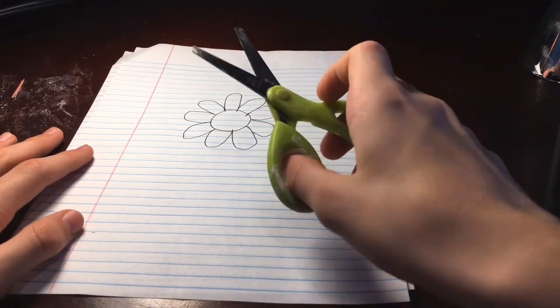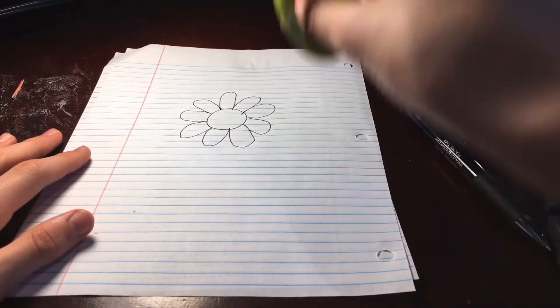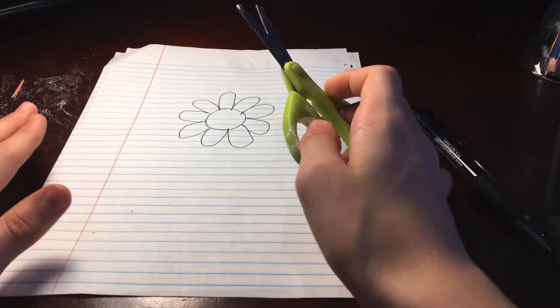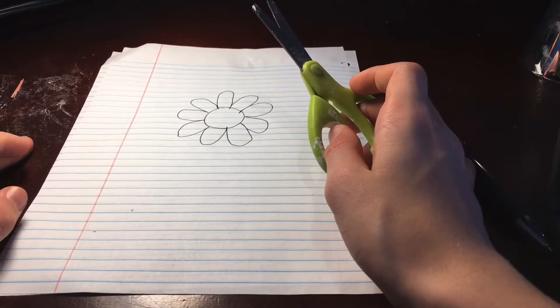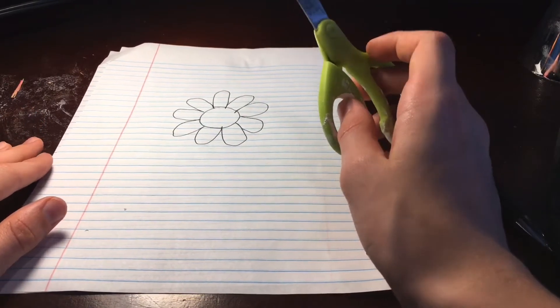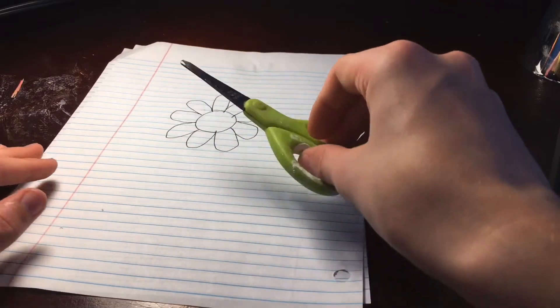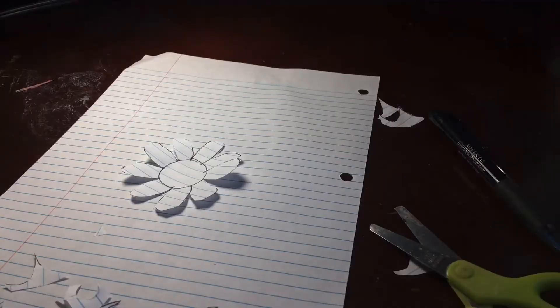So the next step is to cut out your flower. And also I'm super sorry, but my other pen ran out of ink halfway through drawing the flower, so I just drew a new flower. Sorry if you noticed that. There, it's cut out.